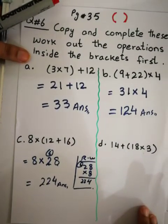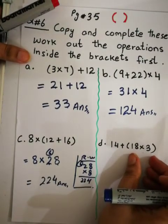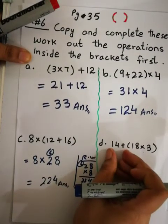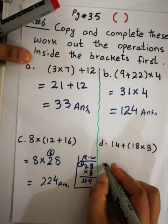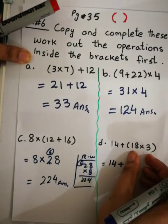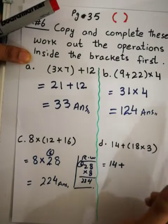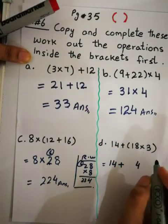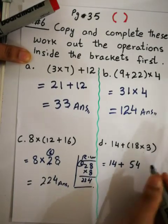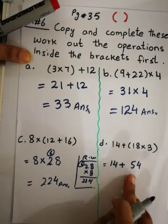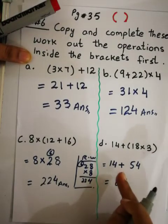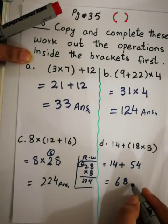Come to part d. Here 8×3 is in the round bracket, so we solve that first: 8×3=24. The 14+ outside comes down as it is. Now 14+54=68 — 4+4=8, 1+5=6 — so the answer is 68.